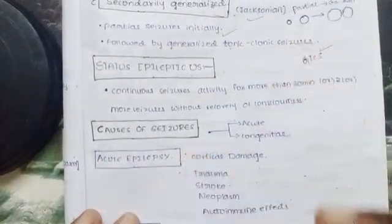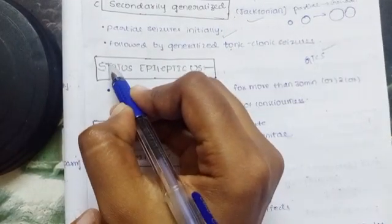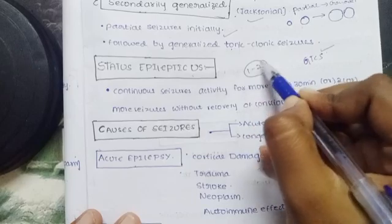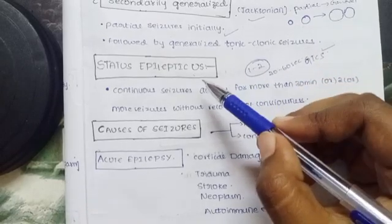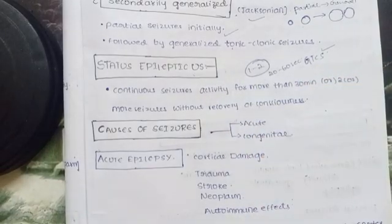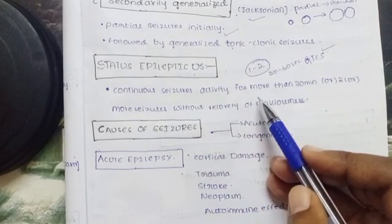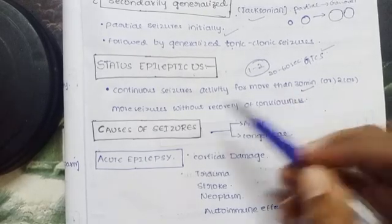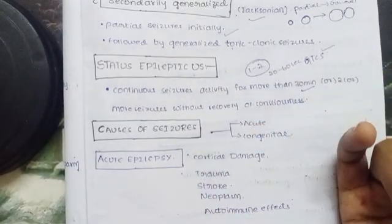Status epilepticus is a serious condition. Like status asthmaticus in asthma, status epilepticus means the person has continuous seizure activity for more than 30 minutes. It involves two or more seizures without recovery of complete consciousness between them. This is very rare but serious.